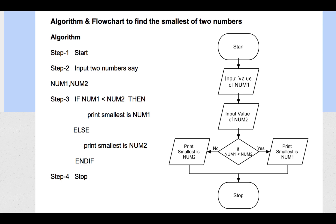Finding the smallest number is an important example because it introduces selection. In a program you sometimes have to make a decision: if a value is greater, the program goes one path; if less, it goes another. This uses the diamond shape in flowcharts. The algorithm steps are: Start, input two numbers number one and number two, if number one is less than number two then smallest is number one, else smallest is number two, end if, and stop.